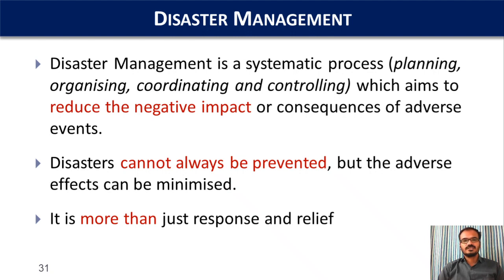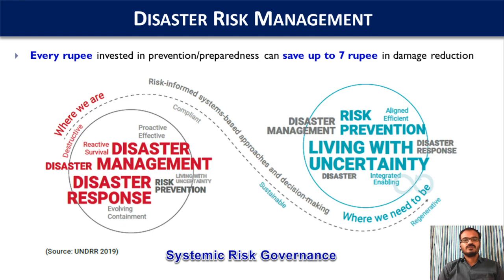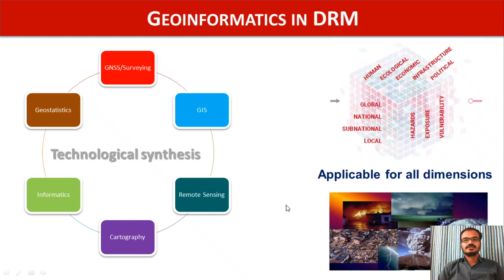But still most of the countries are focusing mainly on response and relief, including countries like India. Only in certain disasters like cyclone are we preparing people, but in most of the cases we are very much focused on disaster response. The real disaster risk management requires risk prevention, because every rupee invested in prevention or preparedness can save up to 7 rupees in damage reduction. Economic damage is now the biggest problem due to disasters, not life loss. So in order to reduce the economic impacts, we need a systematic risk governance with risk-informed, system-based approaches and decision-making processes, for which the role of geoinformatics is formidable.